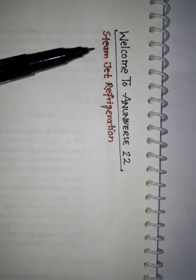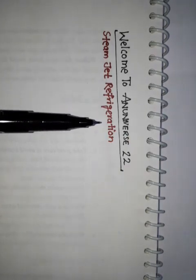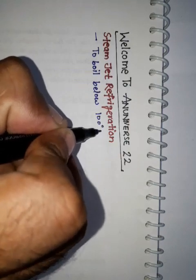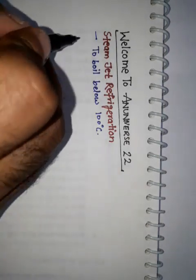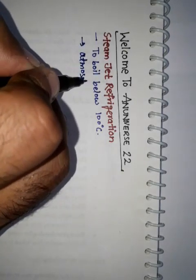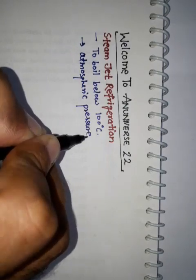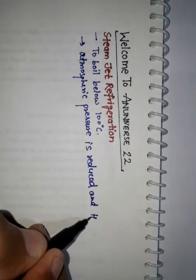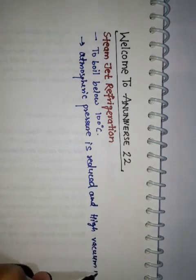Friends, welcome to N-Universe Double Two. In this video we will try to understand steam jet refrigeration. The principle of steam jet refrigeration is to boil the water below 100 degrees Celsius under reduced pressure conditions. It is possible to boil water below 100 degrees Celsius when atmospheric pressure is reduced and high vacuum is created.